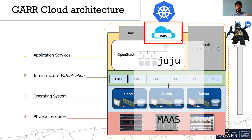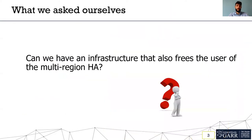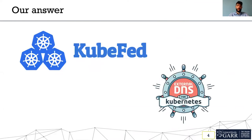This represents the declarative part of the project. Kubernetes ensures high availability inside a single cluster for applications and services. But we want to ensure the same high availability outside a single Kubernetes cluster. And for this we asked ourselves: can we have an infrastructure that also frees the user from managing multi-region HA? And we found the answer in KubeFed and external DNS.